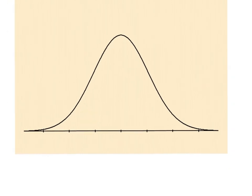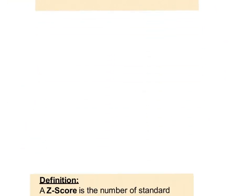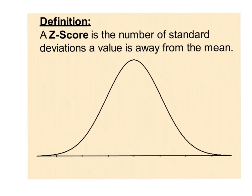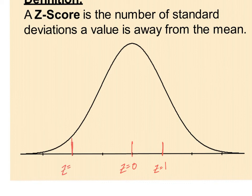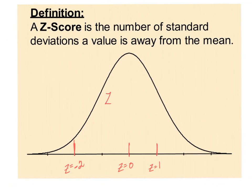That calculation is called the Z-score. A Z-score is the number of standard deviations away from the mean. If you are the mean, your Z-score is 0. One standard deviation above gives a Z-score of 1. Two standard deviations below gives a Z-score of negative 2. A negative Z-score means you're below the mean. The formula is: Z = (X − μ) / σ — your data point minus the mean, divided by the standard deviation.